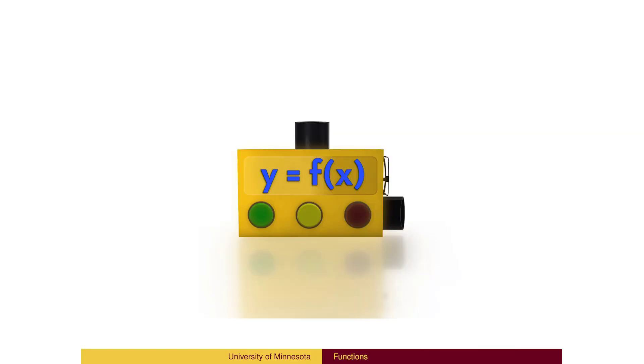One way to think of a mathematical function is as a calculation box. We put a number into the box. Something happens inside the box to compute the answer, which is the output.